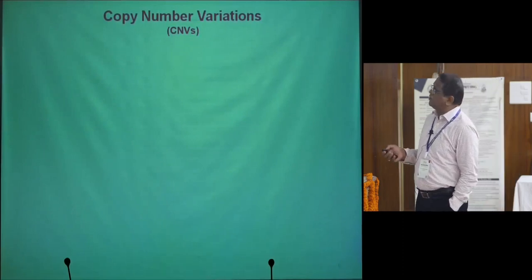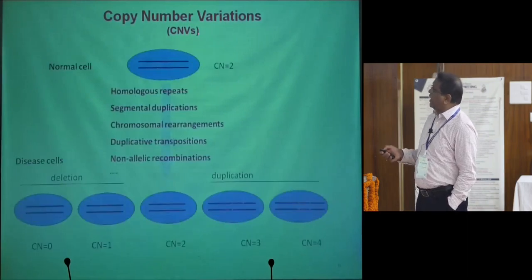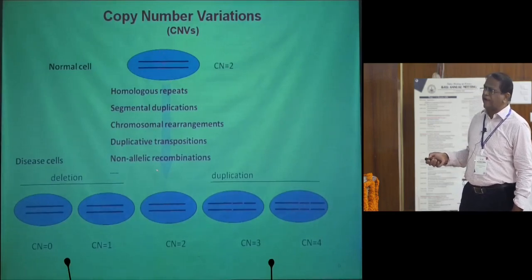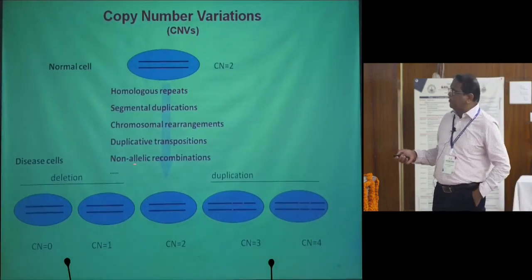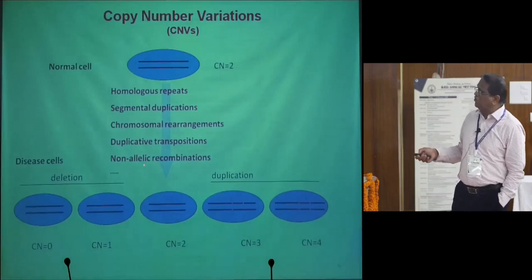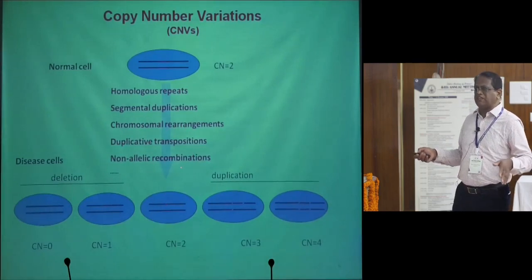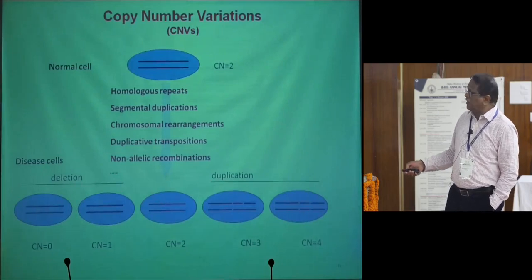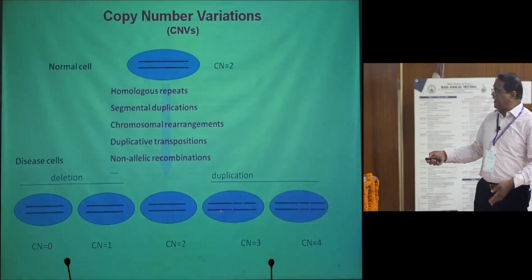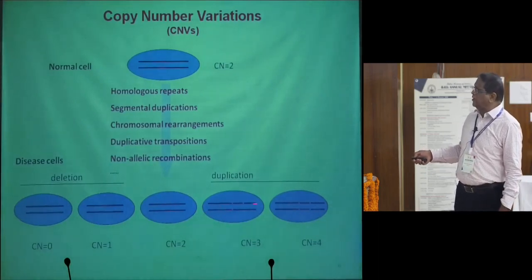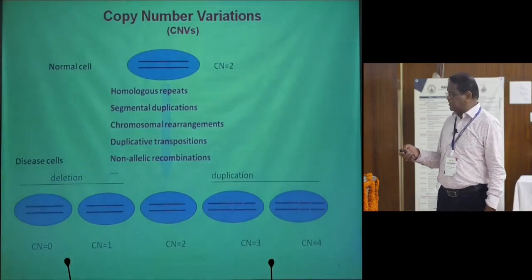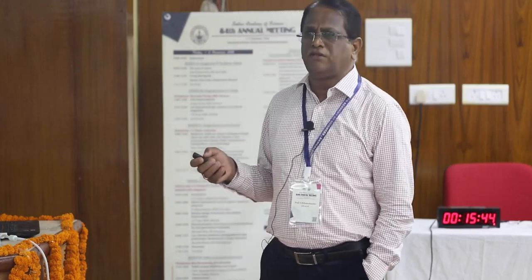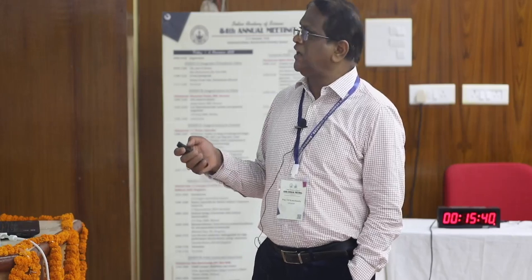I will concentrate on some work we have done on copy number variation in the genome. Because of various factors — homologous repeats, segmental duplication, chromosome rearrangements, duplicative transposition, or non-allelic recombination — the copy number of genome sequences or genes will vary, ending up with deletions or duplications. Both copies can be deleted, or one copy deleted and one added alongside the two copies already present, or two copies added. Based on this they can be classified as duplications or deletions. We analyzed 1,715 individuals using 2 million CNV markers.